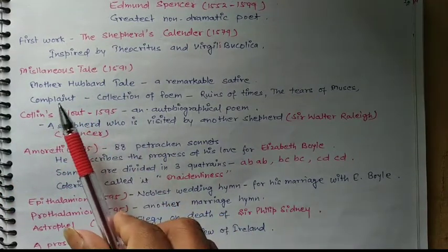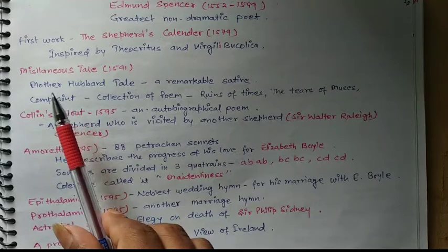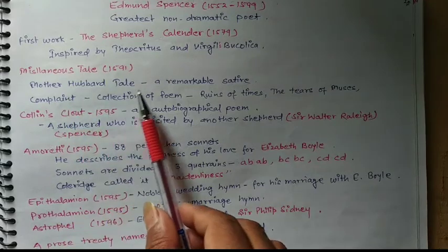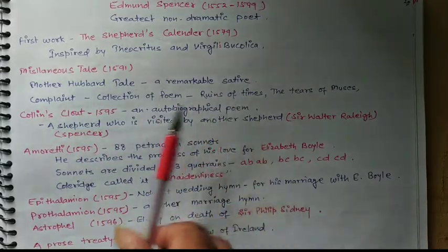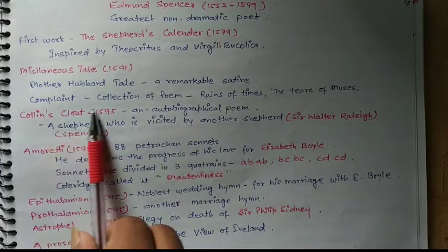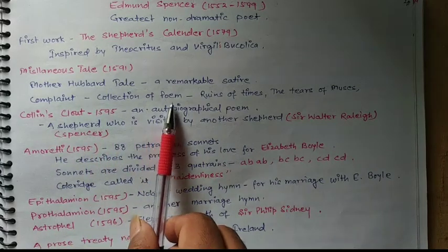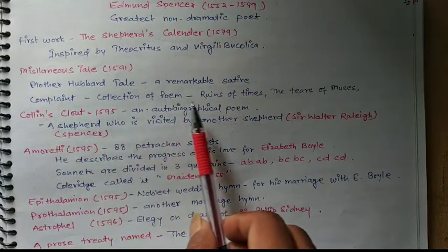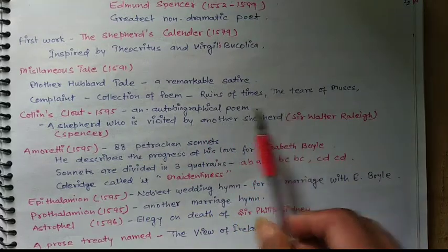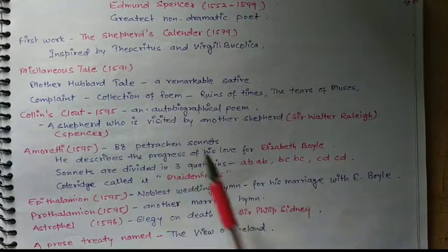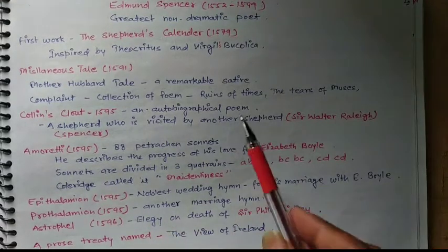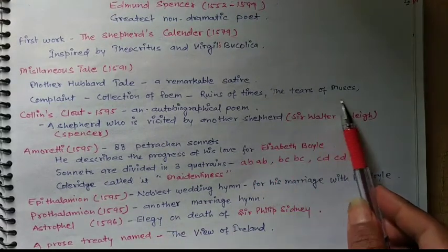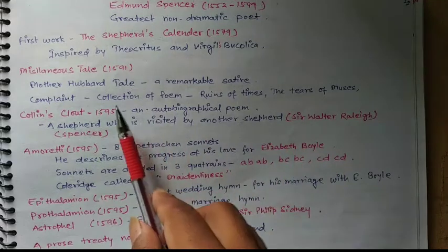He wrote some miscellaneous works in 1591. The first was Mother Hubbard's Tale, which was a remarkable satire. Next is Complaints, which is a collection of poems — and in this collection, the important poems are Ruins of Time and The Tears of the Muses.